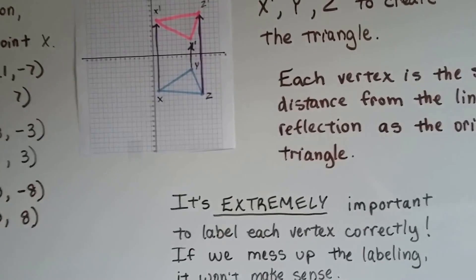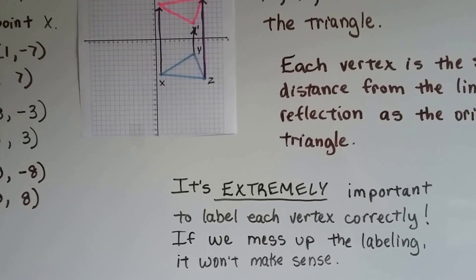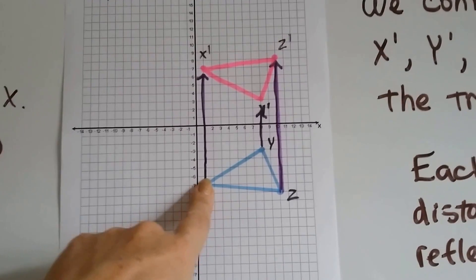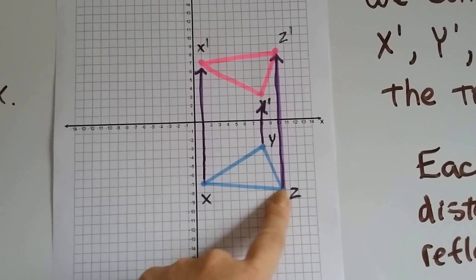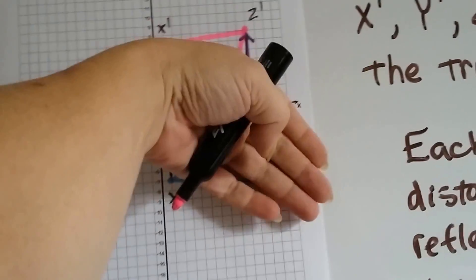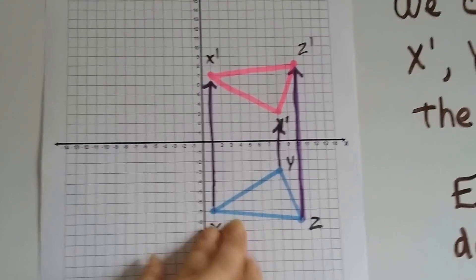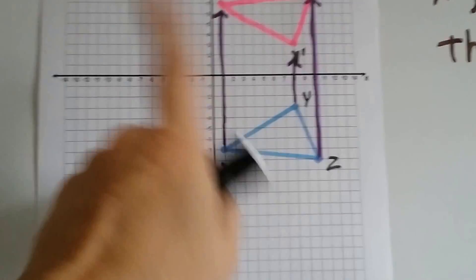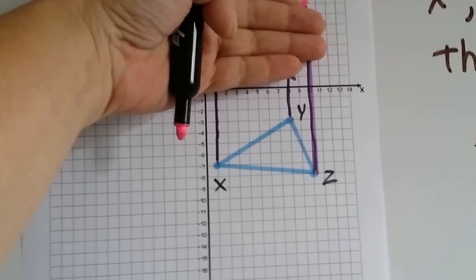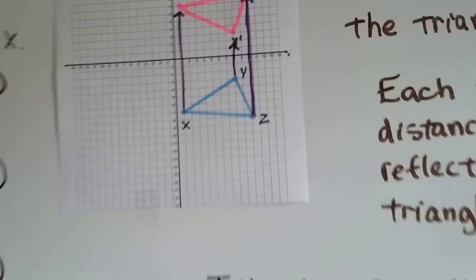And it's extremely important to label each vertex correctly. Because if we mess up the labeling, it won't make any sense. If we say that this is z, and this is x prime, and that's z prime, it wouldn't make any sense. Because that means that it flipped around that way. That actually would be a rotation. We're not doing that. We're just doing a mirror image. So if z is up here, when we do the mirror image, z will now be down here. Really, really important.